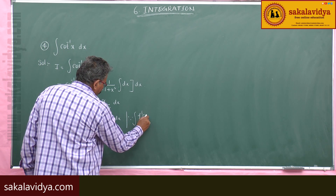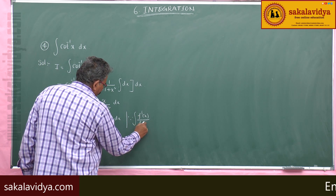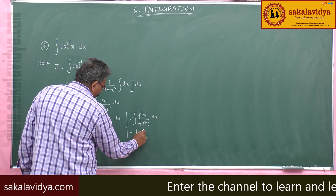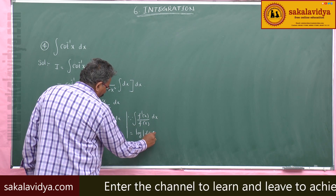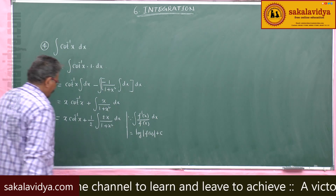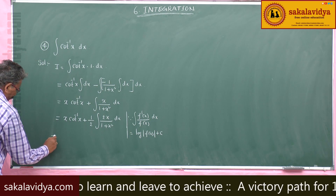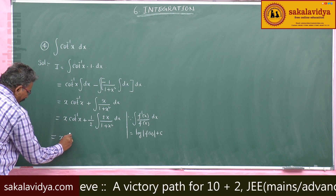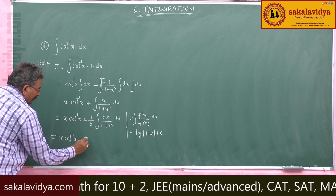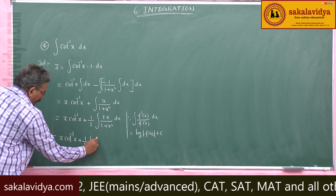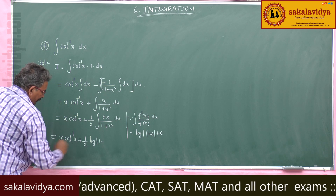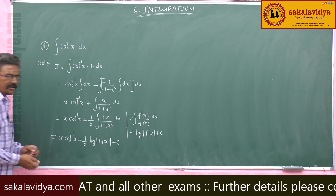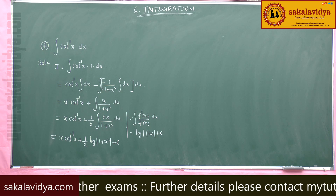Using the formula: integral f dash x by f(x) dx is equal to log mod f(x) plus constant of integration. So the final answer is x cot inverse x plus 1 by 2 log mod (1 plus x square) plus constant of integration.